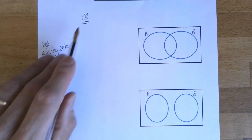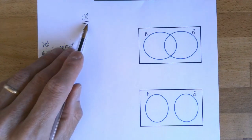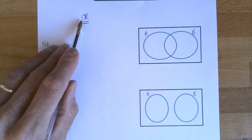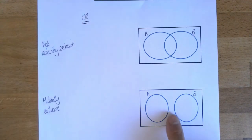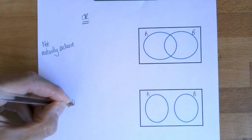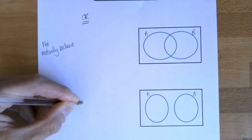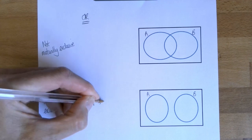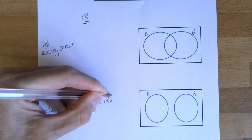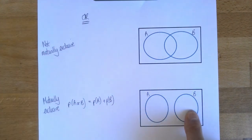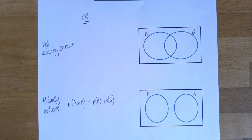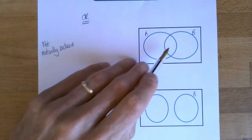Two events that can't happen at the same time we say are mutually exclusive, and two events which can happen at the same time are not mutually exclusive. If they're mutually exclusive, the probability of A or B happening is just those two probabilities added together. For example, probability my team wins is 0.7, they lose 0.1, so win or lose is 0.8.